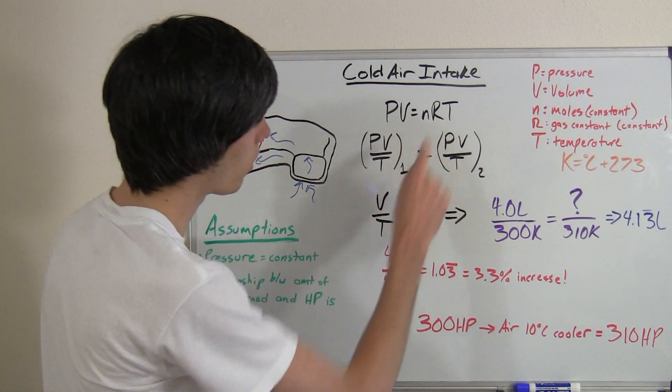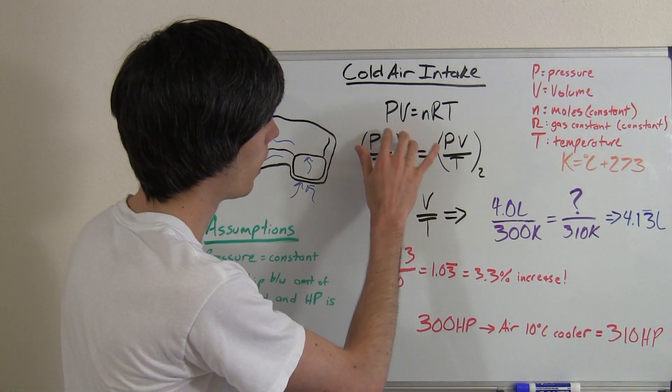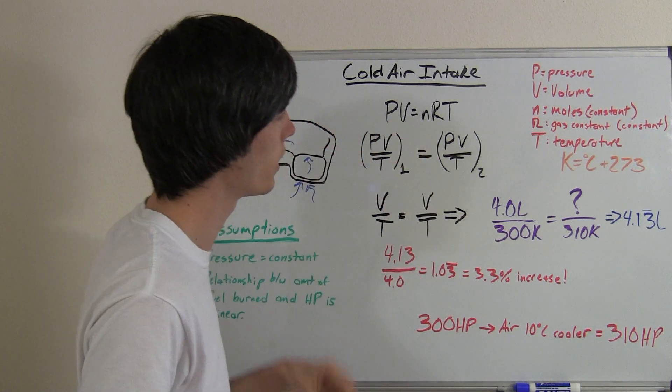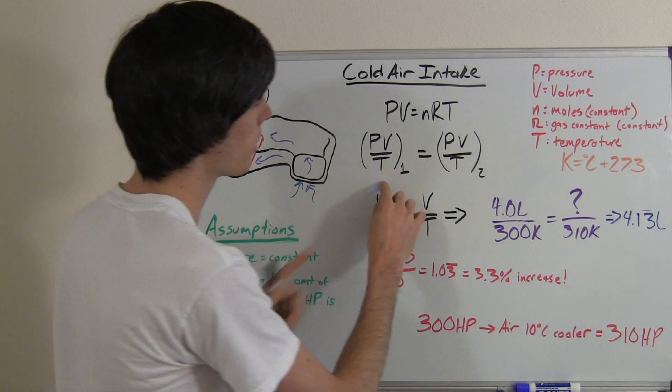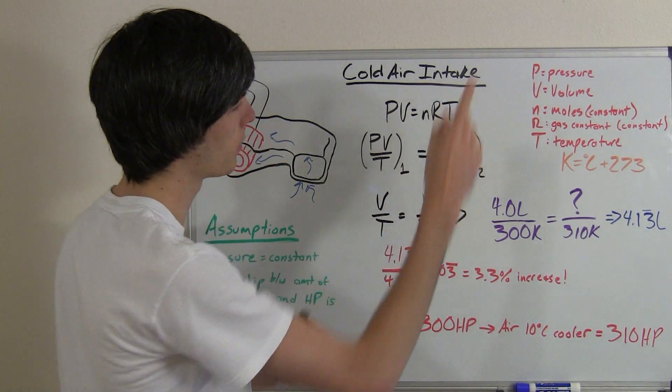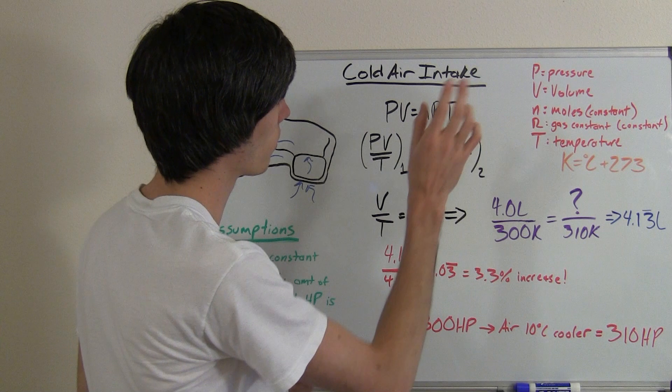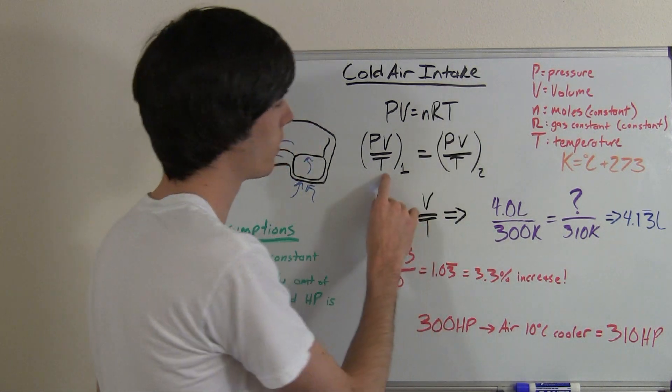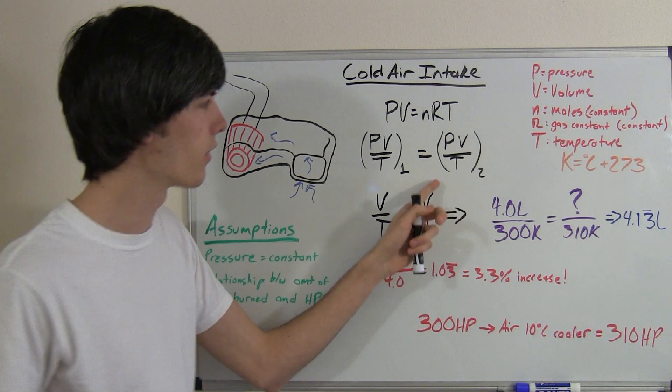So N and R are constants. So if you have a certain state at a certain pressure and you change that pressure, then you can relate the volume and temperature with this equation by eliminating this since it's always going to be a constant. So you can always say PV over T equals PV over T. So PV over T of state 1 is equal to PV over T of state 2.